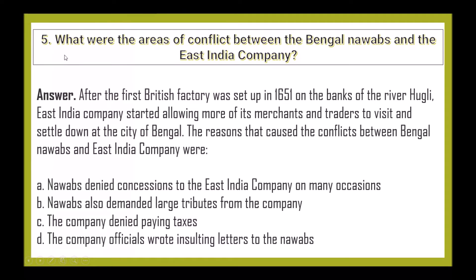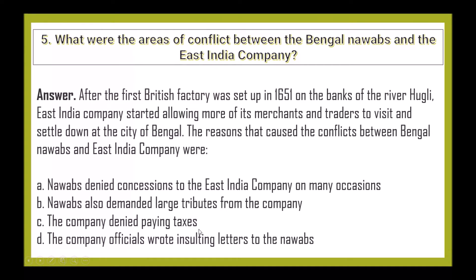Next question: What were the areas of conflict between Bengal Nawabs and the East India Company? After the first British factory was set up in 1651 on the banks of the river Hooghly, the East India Company started pressing for more merchants and traders to visit and settle in Bengal. The conflicts arose because: Nawabs denied concessions to the East India Company on many occasions; Nawabs demanded large tributes from the company; the company denied paying taxes; and company officials wrote insulting letters to the Nawabs.